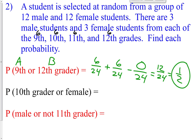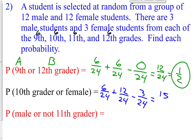Find the probability of selecting a tenth grader or a female. There are 6 tenth graders out of 24, plus 12 females out of 24. But subtract the overlap — how many tenth graders are also female? There are three tenth grade females. So subtract 3/24. Six plus twelve minus three is 15/24, which reduces to five eighths.